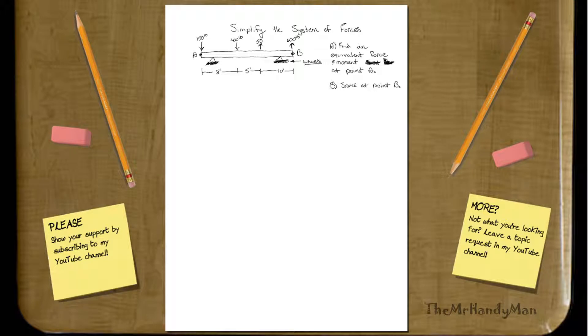Hi there, I'm just gonna give a quick example on how to simplify a system of forces, and let's ignore the supporting structure and just look at the beam.